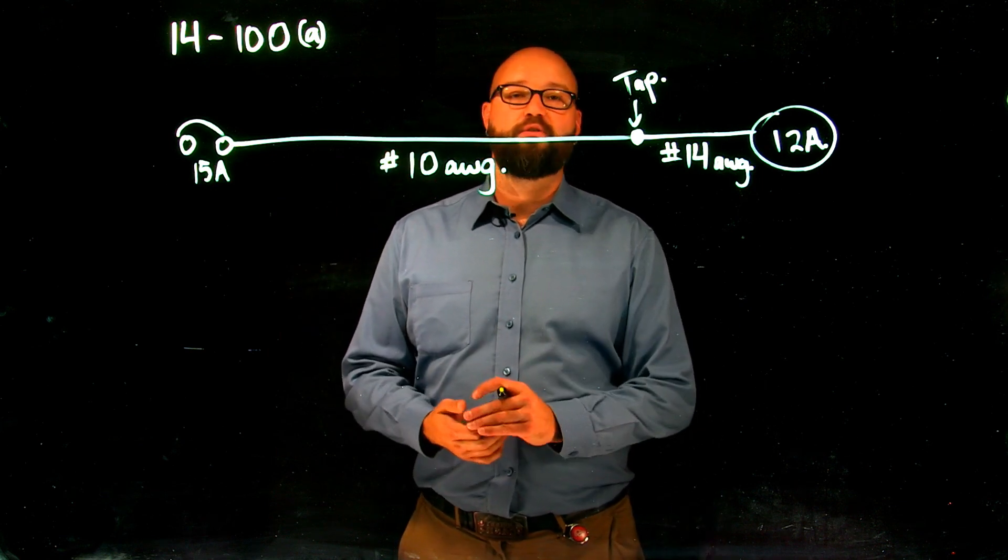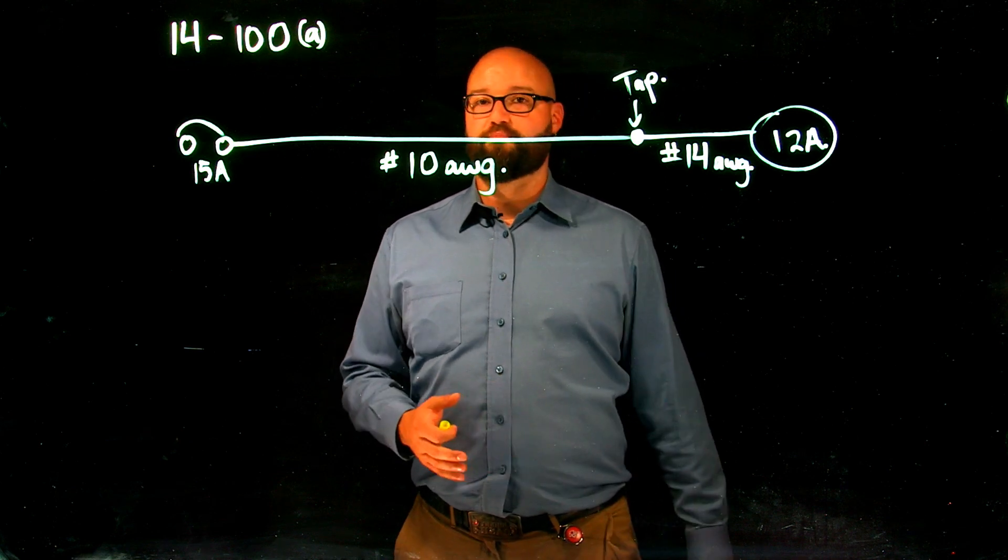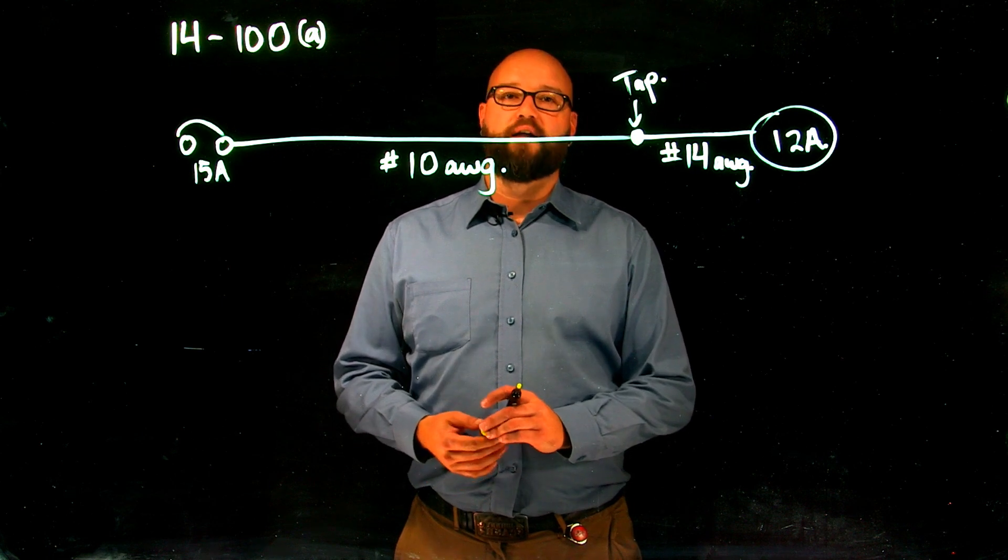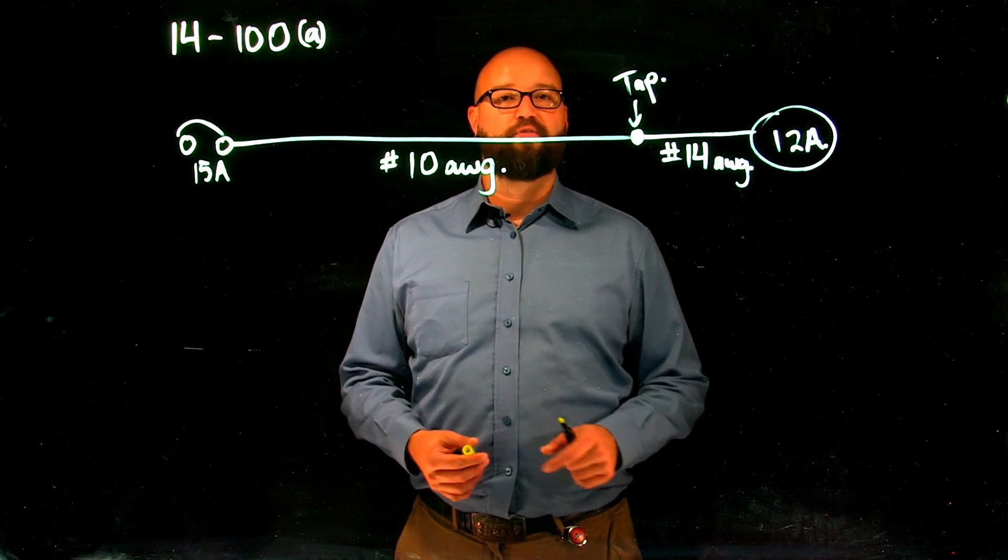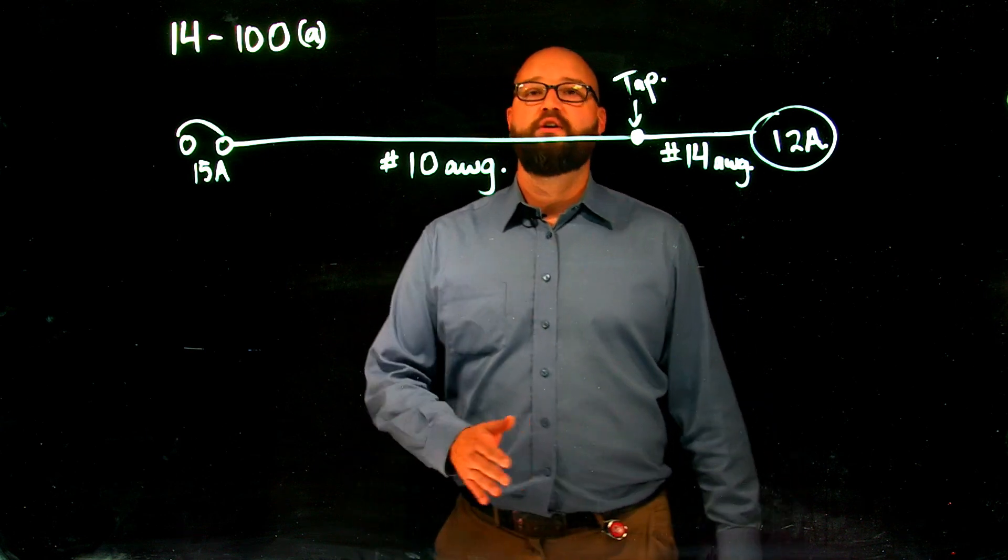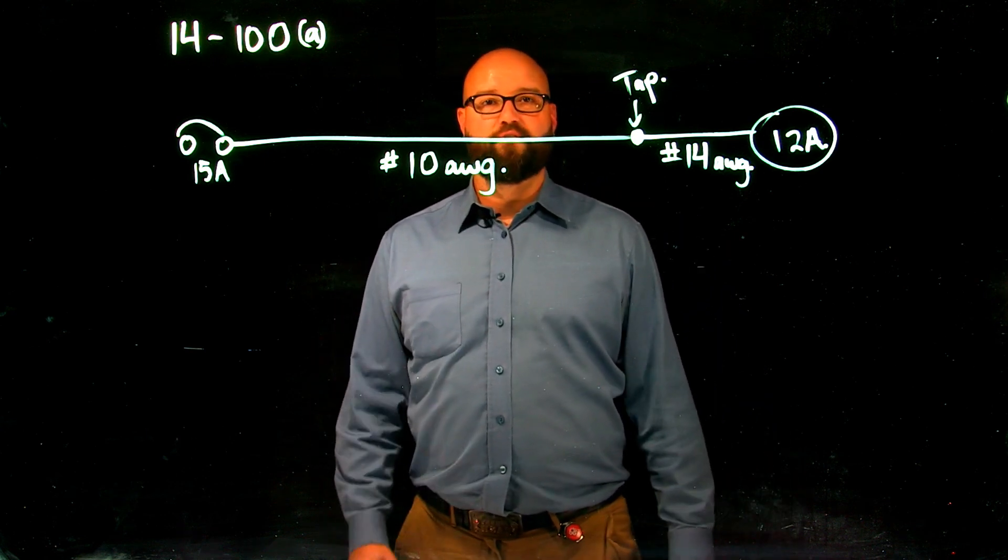This is the first in a series of videos describing steps taken for tap conductors where we don't need to add that overcurrent for decrease in conductor size. Thank you for watching and stay tuned. Next video we'll take a look at 14-100B where we see tap conductors coming out of a splitter. Thank you.